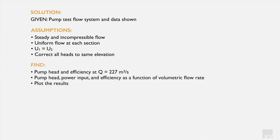We are asked to find the pump head and efficiency for a volumetric flow rate Q of 227 meters cubed per second — note that Q and V-dot are used interchangeably for volumetric flow rate here. We are also asked to identify the pump head, power input, and efficiency as functions of volumetric flow rate and to plot our results.